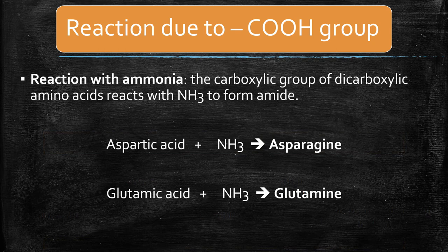The carboxylic group of dicarboxylic amino acids reacts with ammonia to form amides. Aspartic acid reacts with ammonia to form asparagine, and glutamic acid reacts with ammonia to form glutamine.